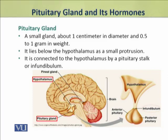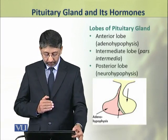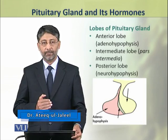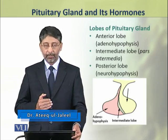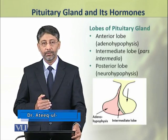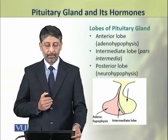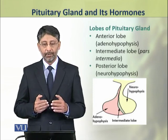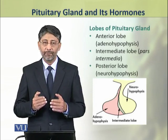The pituitary gland has 3 lobes. The anterior lobe, which is called adenohypophysis. The second lobe is the intermediate lobe or pars intermedia. The third lobe is the posterior lobe, also called neurohypophysis.